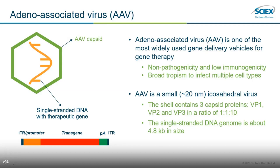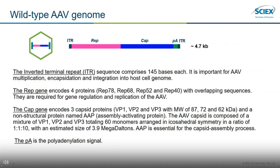Adeno-associated virus is an icosahedral virus with a protein shell, referred to as a capsid, that is assembled of three viral proteins named VP1, VP2, and VP3 in an ideal ratio of 1 to 1 to 10. Let's take a look at the wild-type AAV genome. It contains two ITRs, a rep gene, a cap gene, and a poly-A signal.